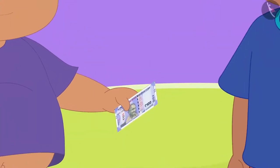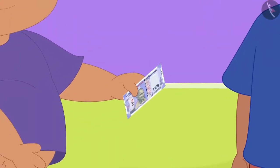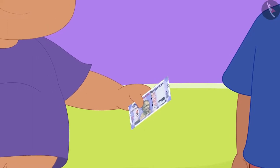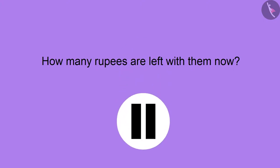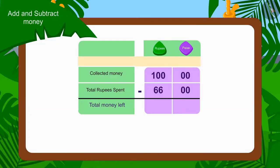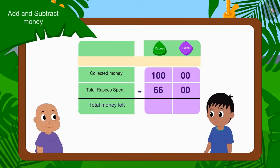Raju and Bablu had 100 rupees in the beginning. So can you tell how many rupees they have left now? If you want, you can pause the video and find the answer. Wow, kids, you have found the right answer. Raju and Bablu now have 34 rupees left. Children, we have used subtraction to find these answers.